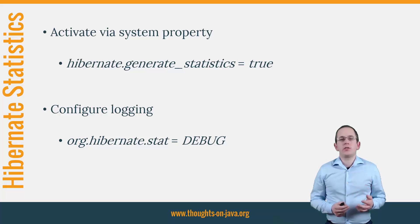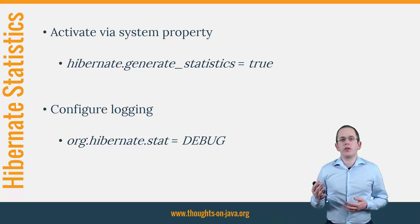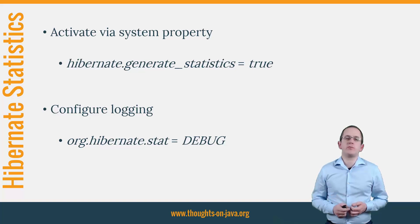You need to set the system property hibernate.generateStatistics to true to activate the Hibernate statistics component. You can also do this in the persistence.xml file and I used this for the code samples of this course. But for real projects, I prefer the system property because I can change it without changing the application.